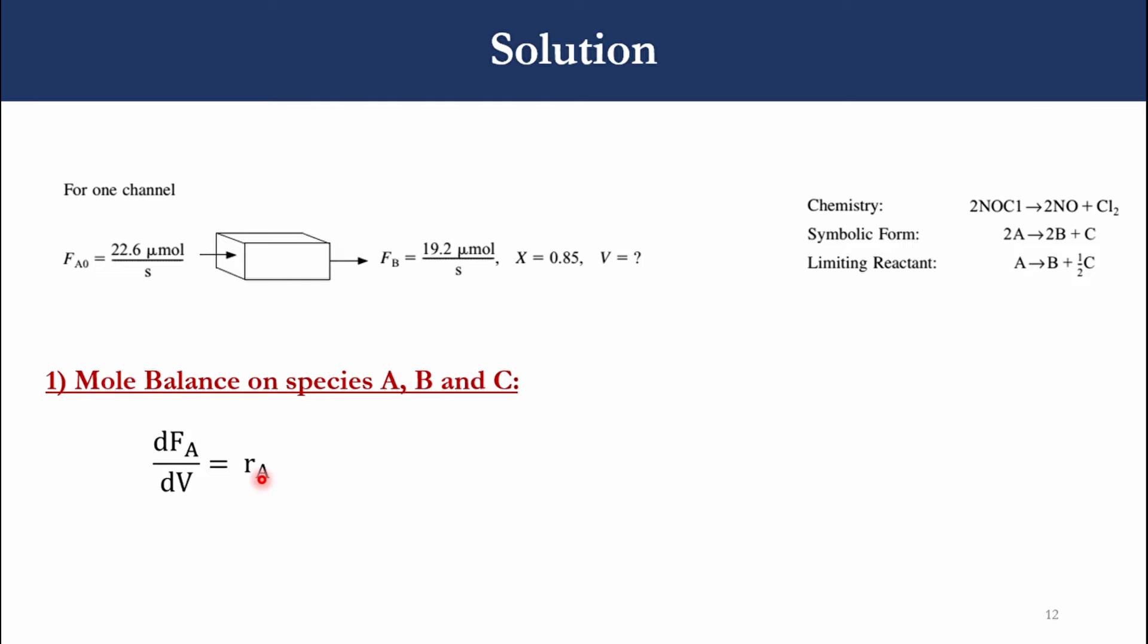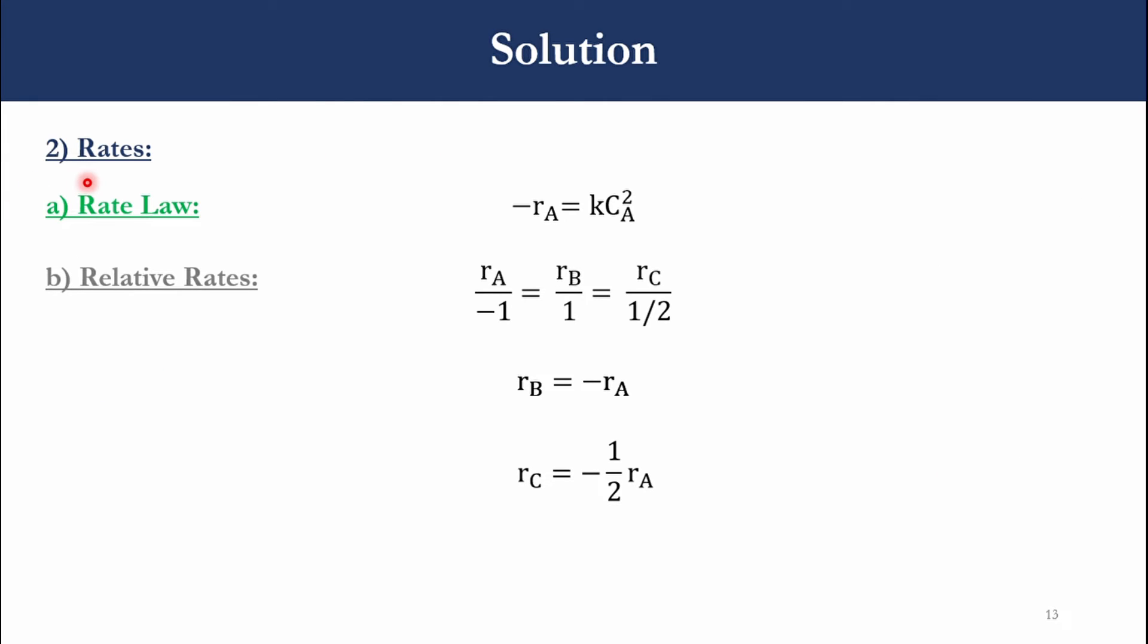Next, using the concept of rates, rate law is minus RA equals K CA squared because it is an elementary rate law. Then applying the relative rate principle: RA over minus 1 equals RB over 1 equals RC over 1/2. Once we combine these two, we get RB equals minus RA. And once we combine RC and RA, we get RC equals minus 1/2 times RA. This is the concept from our previous chapters, chapter number 1 and chapter number 3.